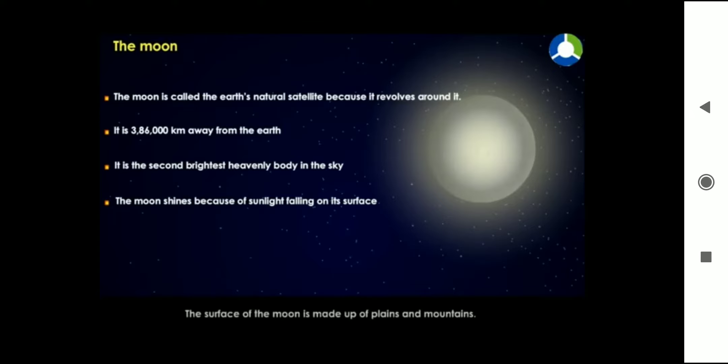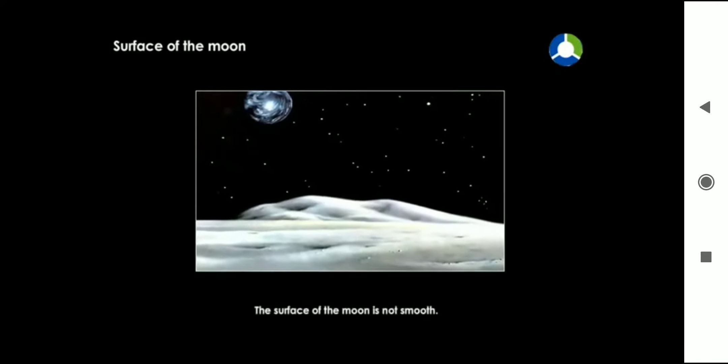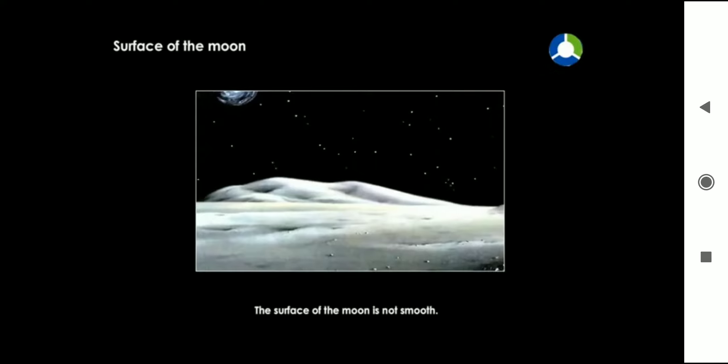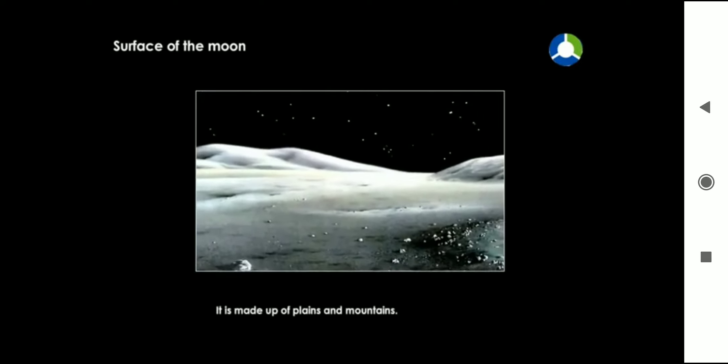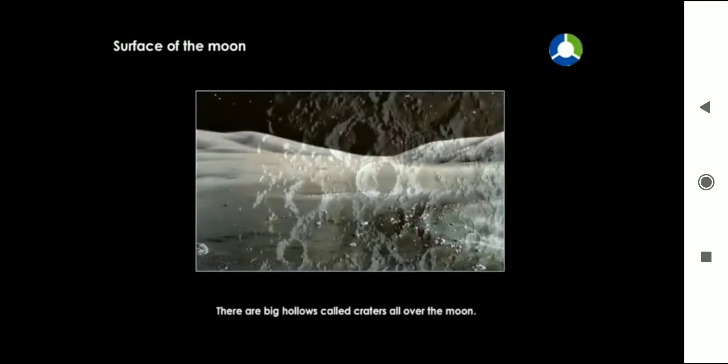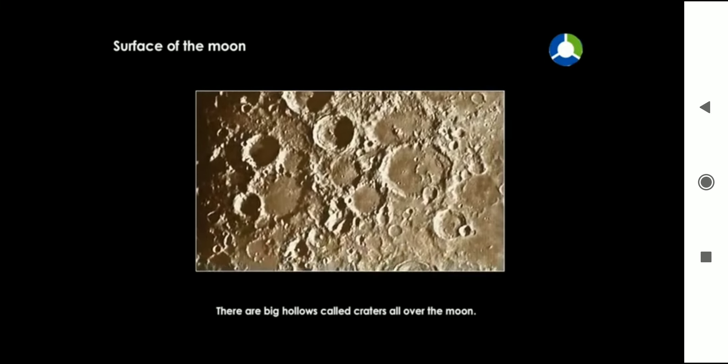The surface of the moon is made up of plains and mountains. The surface of the moon is not smooth. It is made up of plains and mountains. There are big hollows called craters all over the moon.